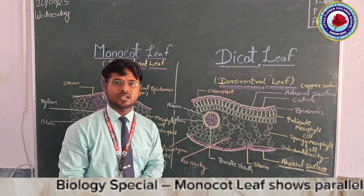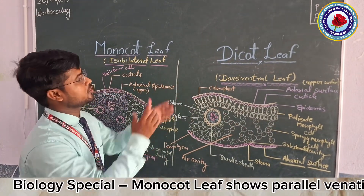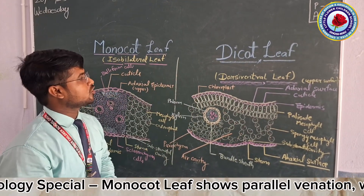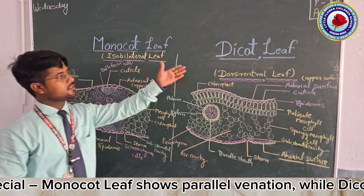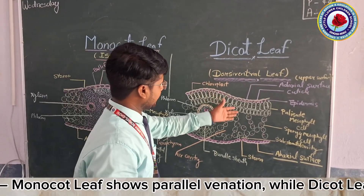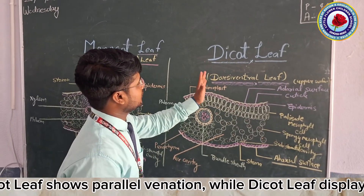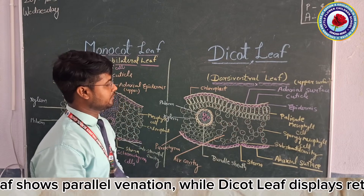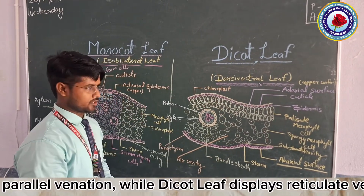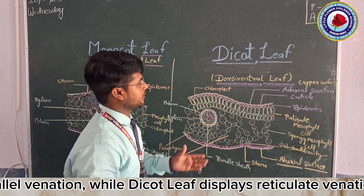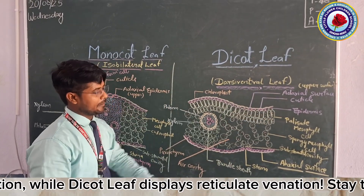I am Vidya Sagar, a biology teacher for classes 11th and 12th. Today I am going to explain the anatomy of a dicot leaf and a monocot leaf. Here is a diagram of a dicot leaf, also known as a dorsiventral leaf, which means it has an upper surface as well as a lower surface. The upper surface is known as the adaxial surface and the lower surface is known as the abaxial surface.